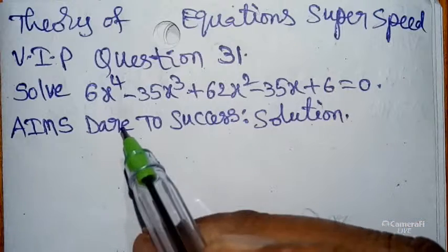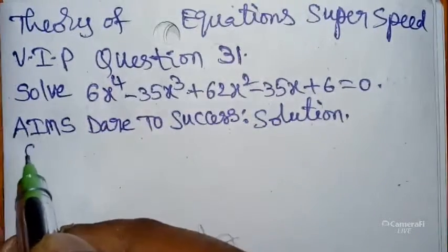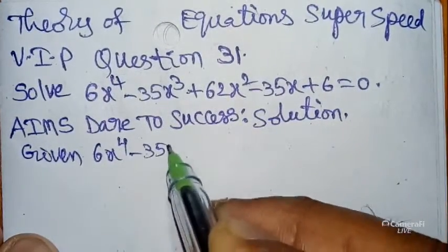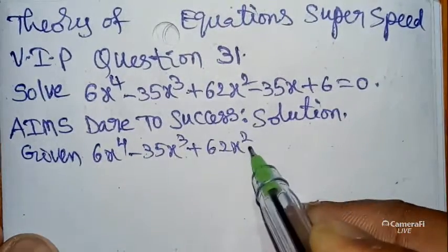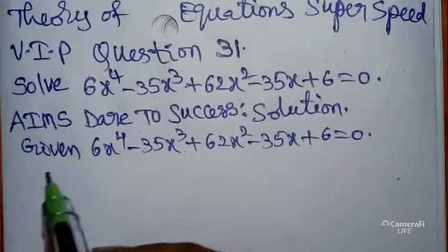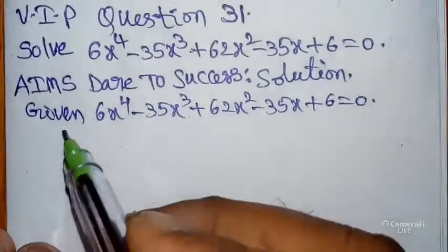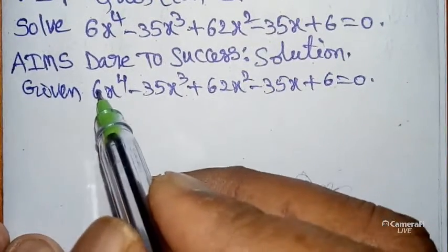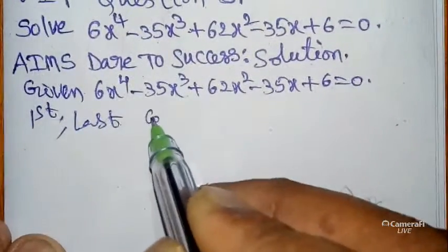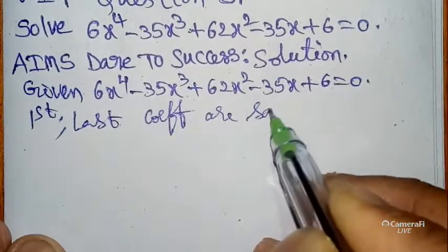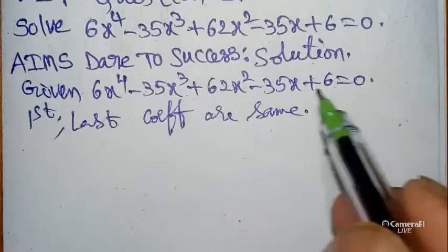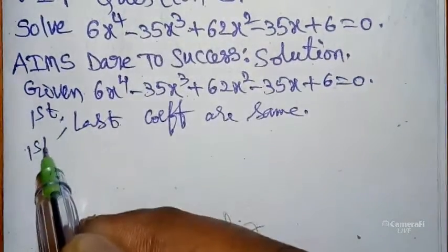Now I want to start the solution. First of all, the given equation is 6x⁵ minus 35x³ plus 62x² minus 35x plus 6 equals 0. You can remember my logic related to this type of question: the first and last coefficients are similar — the first coefficient 6 equals the last constant 6.